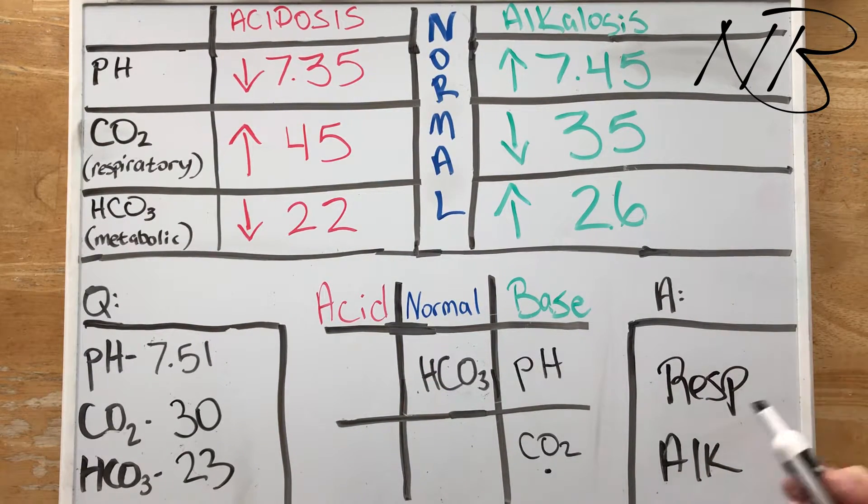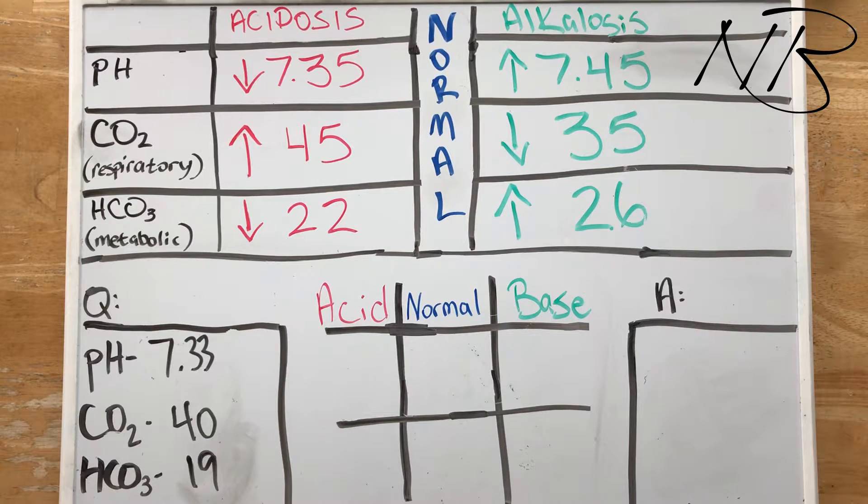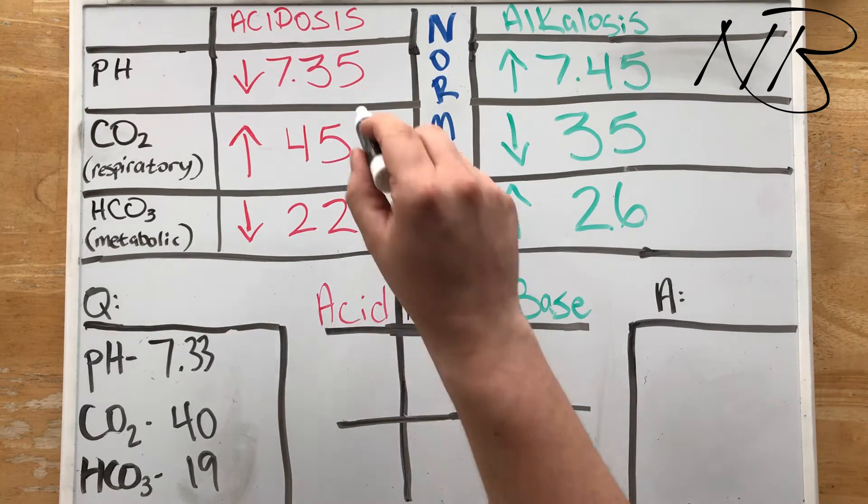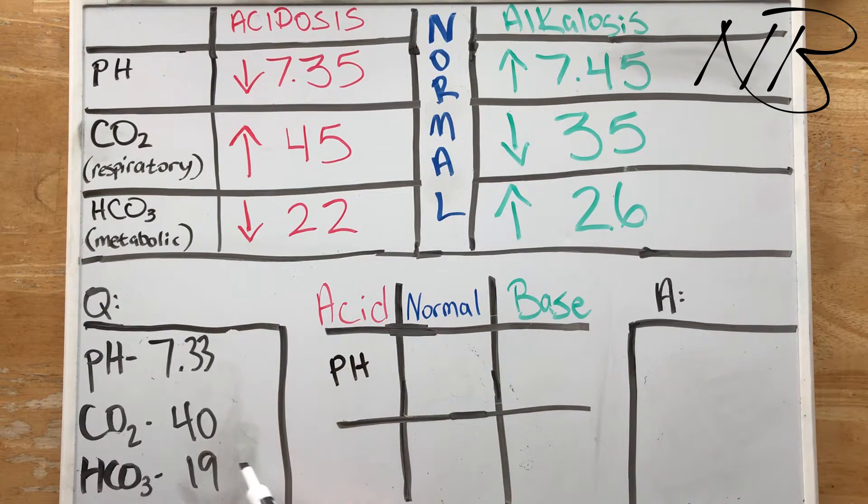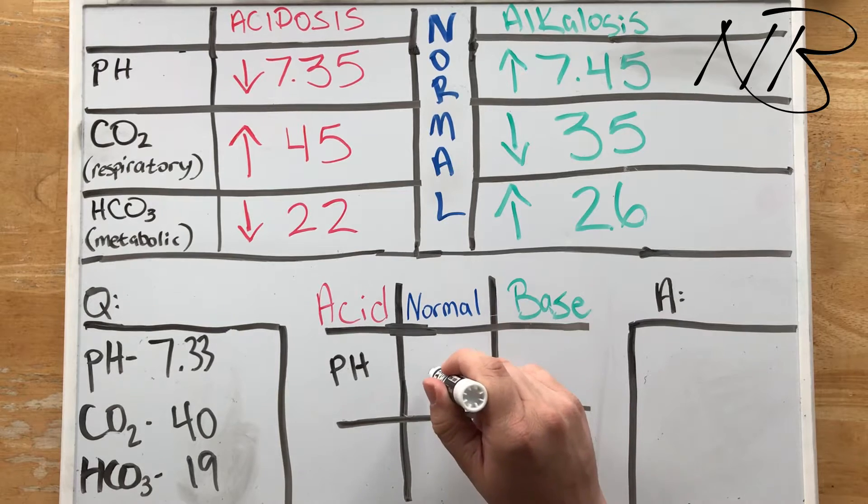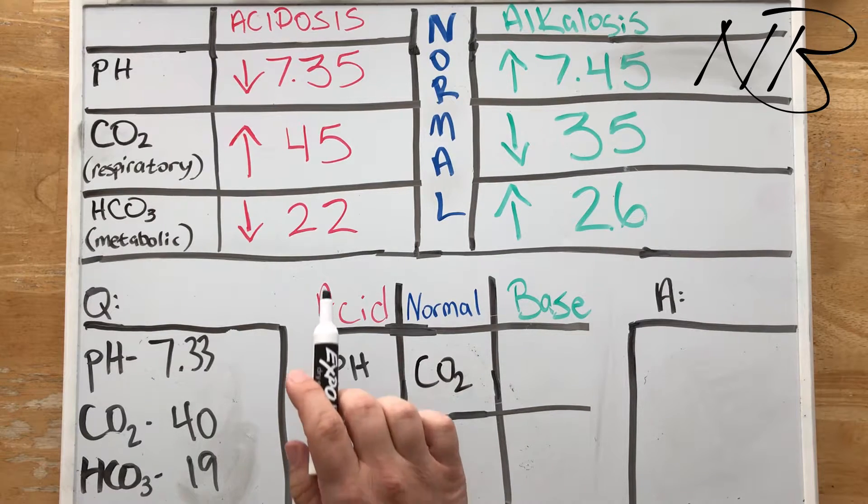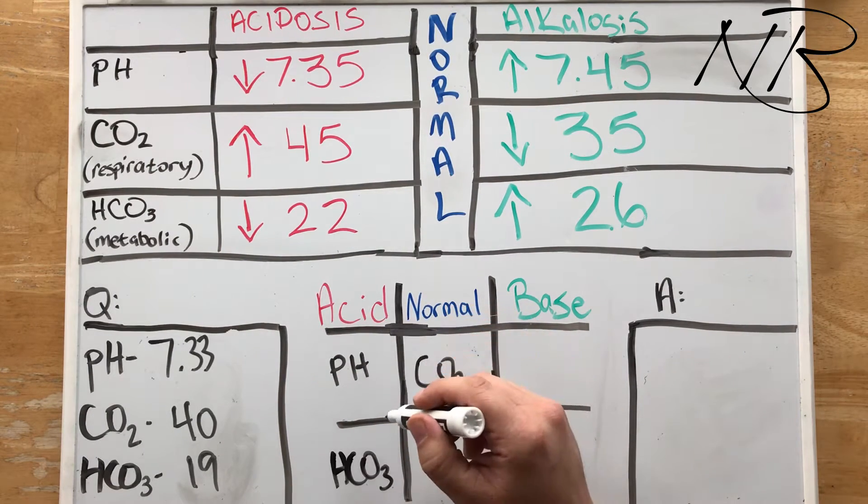For our third question we have a pH of 7.33, a CO2 of 40, and a bicarbonate of 19. So just to reiterate, we look at the pH first. 7.33, well we know that 7.33 is below 7.35, so our pH is going to be in the acid column. Next our CO2 is 40, that's in between 35 and 45, so we know that's normal. And then our bicarbonate of 19 is below that 22, falling in the acid column.